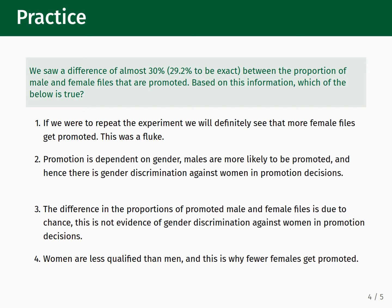Based on this information, which of the following statements is true? 1. If we were to repeat the experiment, we will definitely see that more female files get promoted — this was a fluke. 2. Promotion is dependent on gender; males are more likely to be promoted, and hence there is gender discrimination against women in promotion decisions. 3. The difference in the proportions of promoted male and female files is due to chance, and this is not evidence of gender discrimination against women in promotion decisions. 4. Women are less qualified than men, and this is why fewer women get promoted.